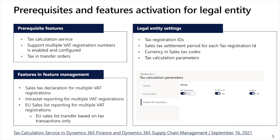Now we will concentrate on the reporting part. For the reporting part, in the legal entity with multiple VAT registrations, in the tax calculation parameters you need to activate VAT declaration, EU sales list, and Intrastat. If any of these parameters is not enabled, then the user experience for reporting will not change for this legal entity, and you can only prepare reports for the country of the legal entity.